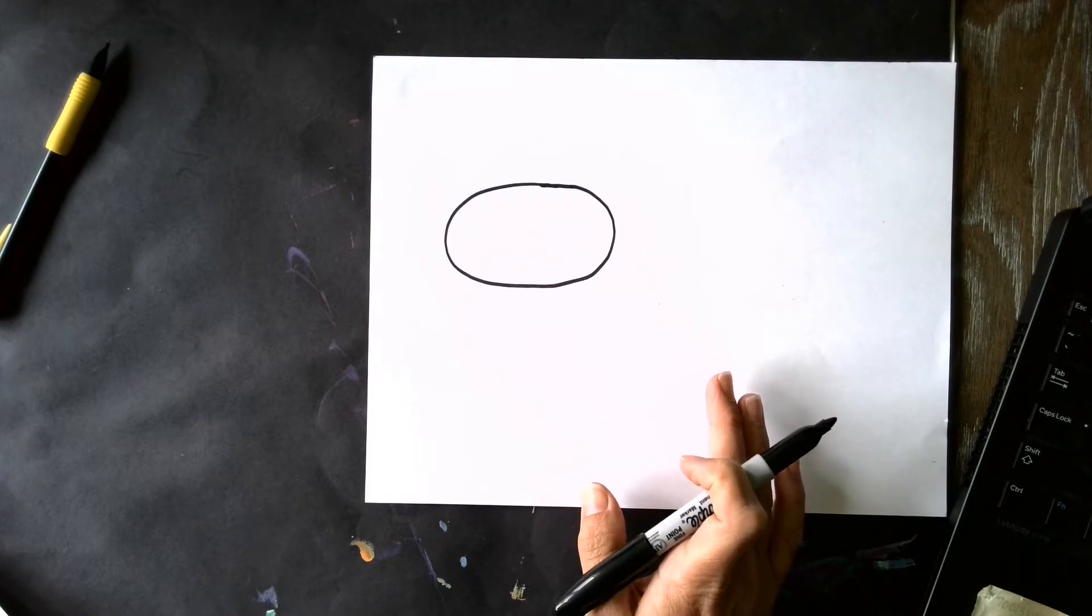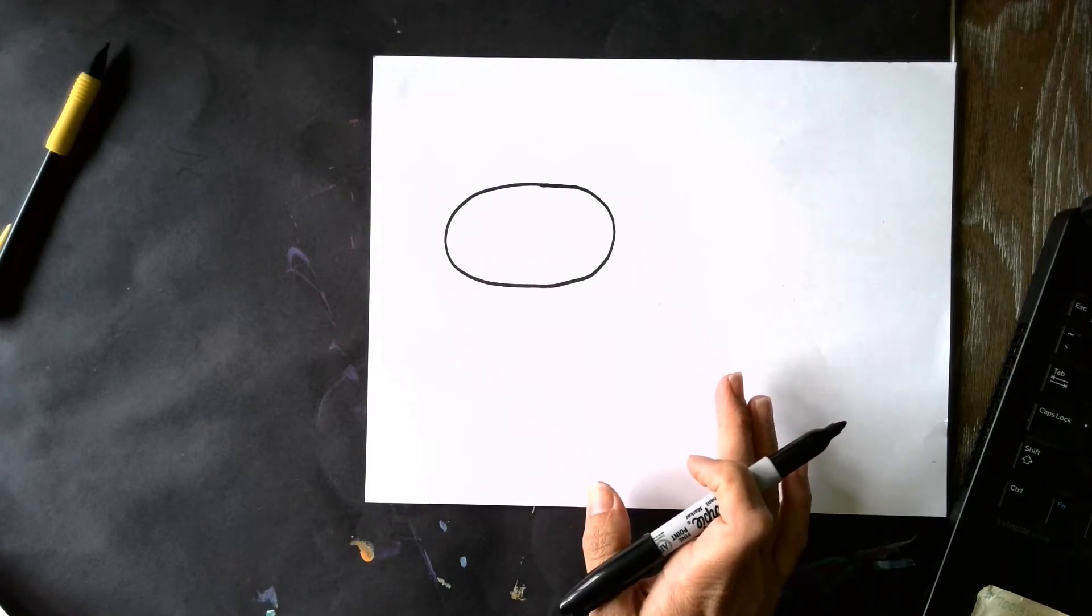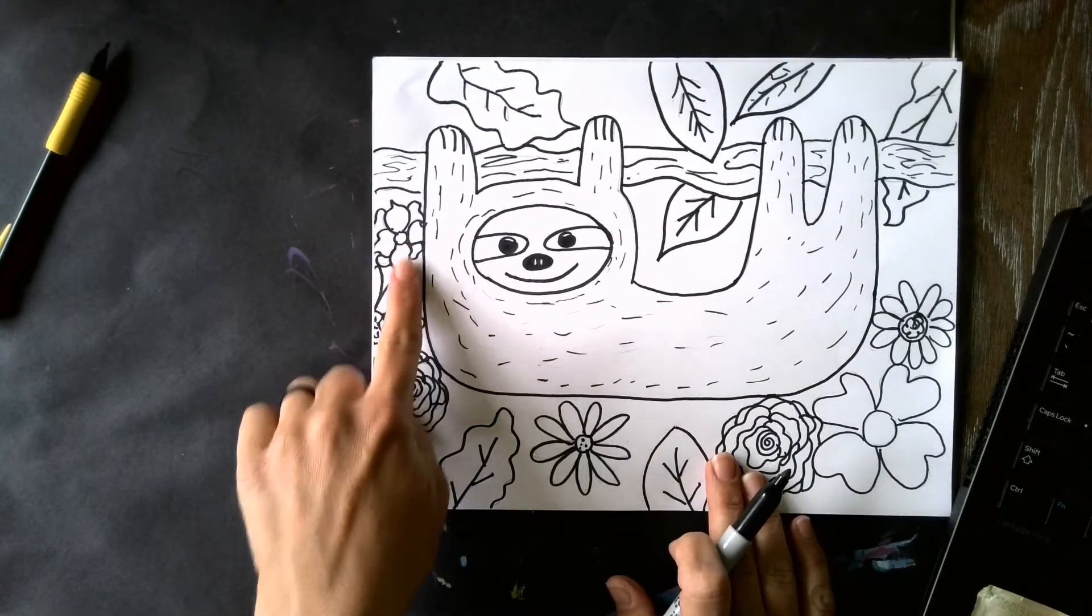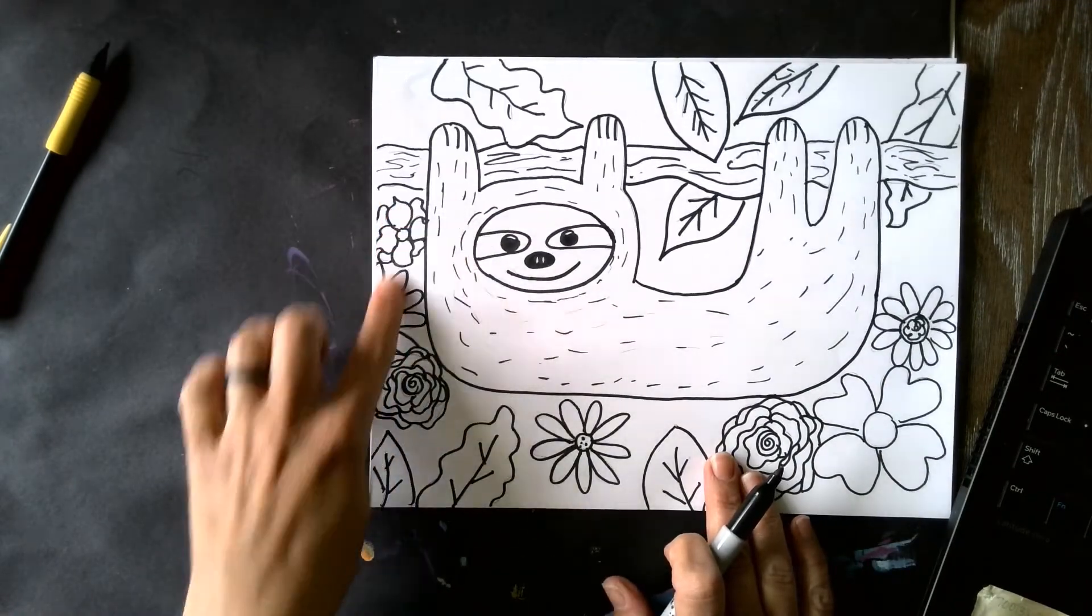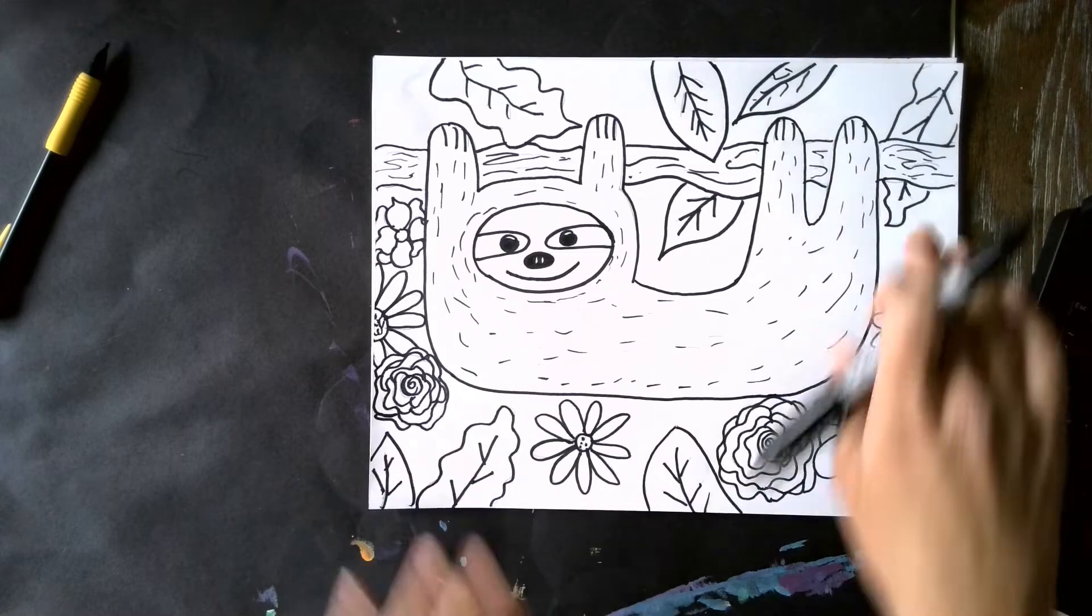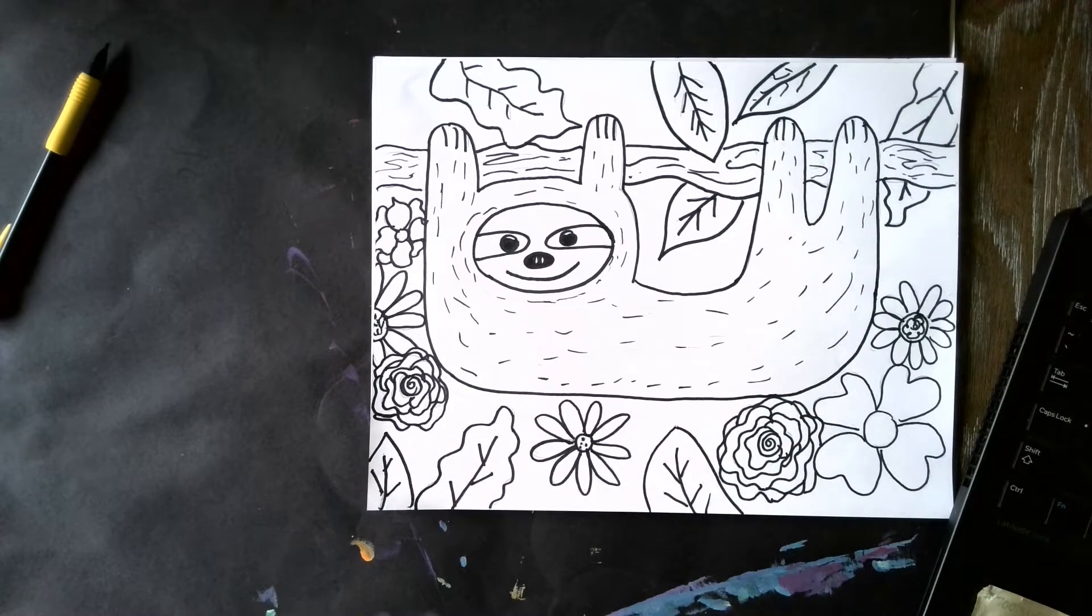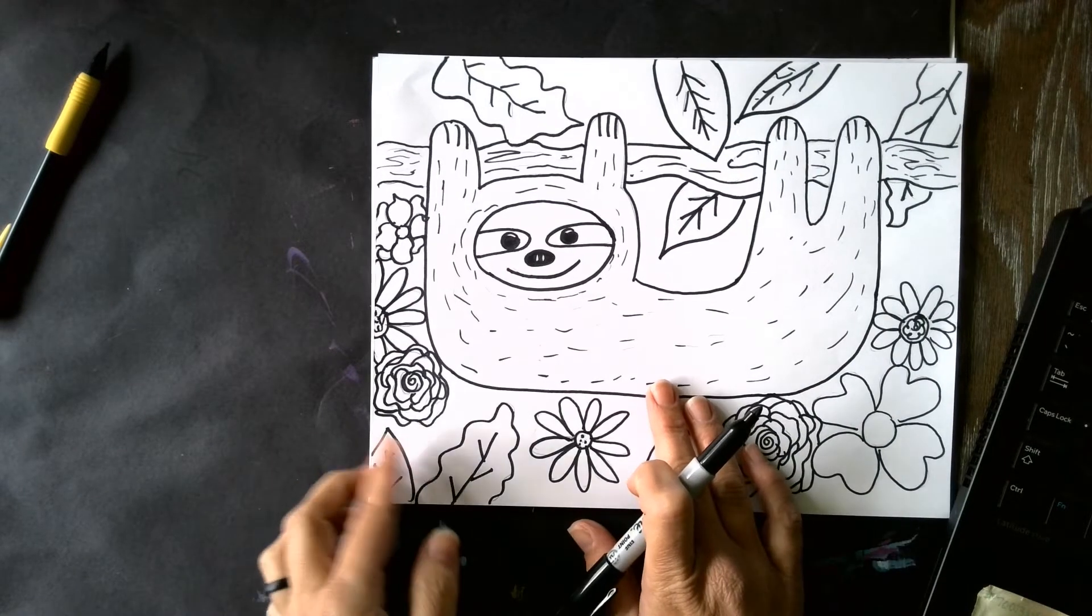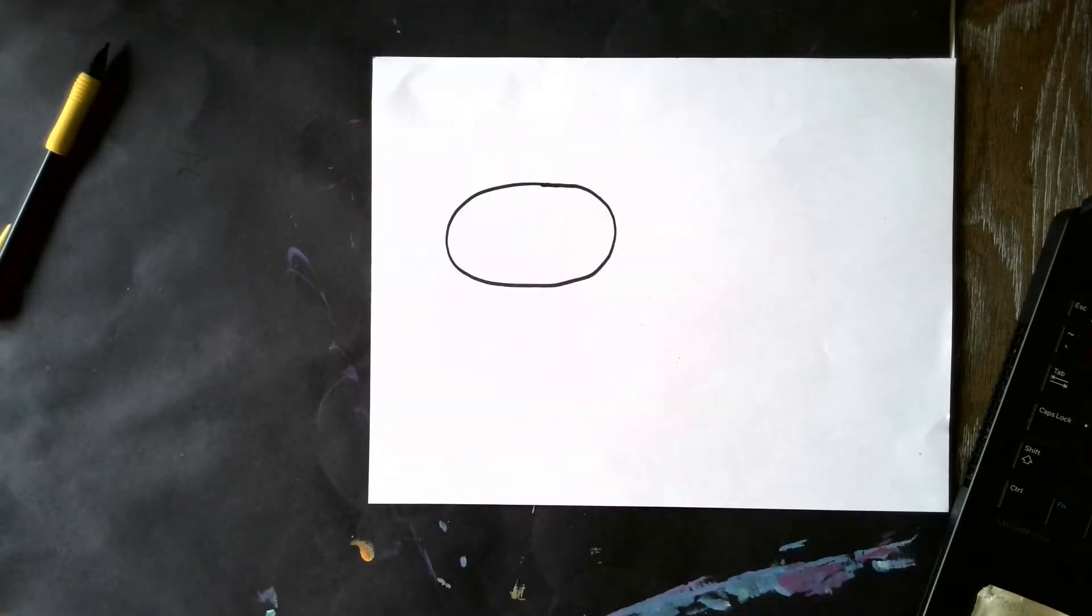You definitely don't want to put it too close because what we're going to do is, here's a finished piece, we're going to have a little space on the side just for some fun decorations like flowers and leaves. We're actually going to have them hanging from a little branch like they do. So you want to leave a little bit of space so you can make that happen.